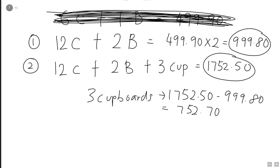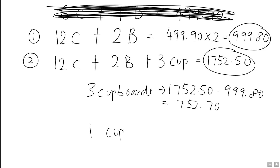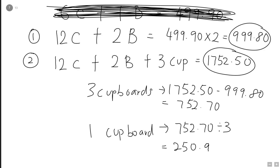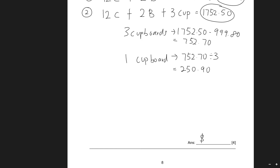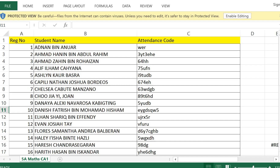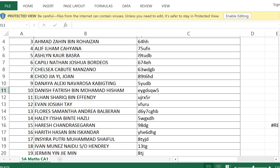The question asks for the cost of one cupboard. $752.70 ÷ 3 = $250.90. Remember to include your units — don't lose half a mark because of missing units.